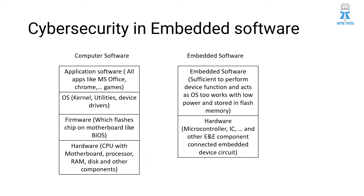On the right side of the slide, you can see the embedded software. The hardware at the bottom includes a microcontroller, ICs, and other electrical and electronic components interconnected on a PCB — that is the embedded device circuit. On top of it, we have an embedded software which is sufficient to perform the device function and also acts as an operating system. It works both functions combined, which is why it operates with less power consumption and is stored in flash memory, consuming less memory as well.